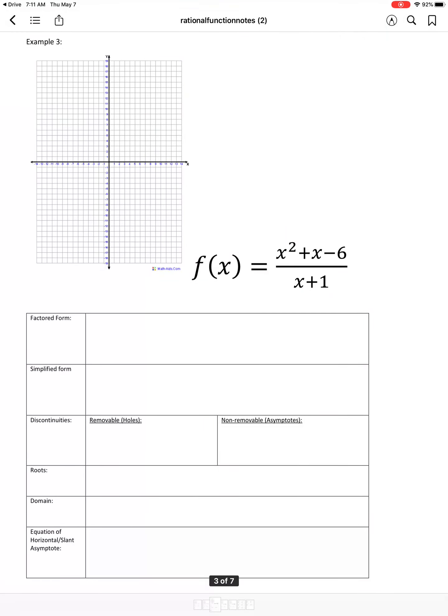All right, with our rational functions, again, the first step we should always do is always factor whatever we can in the numerator and denominator. The top becomes x plus 3 times x minus 2, and the denominator remains at x plus 1.